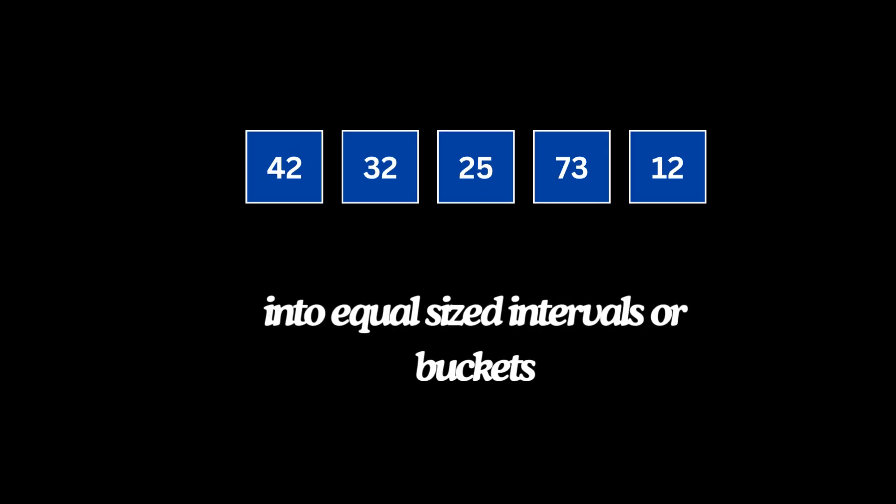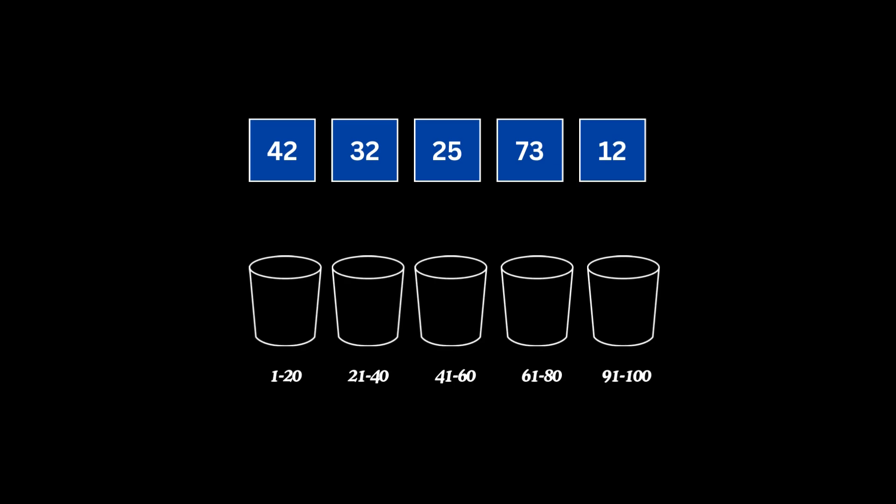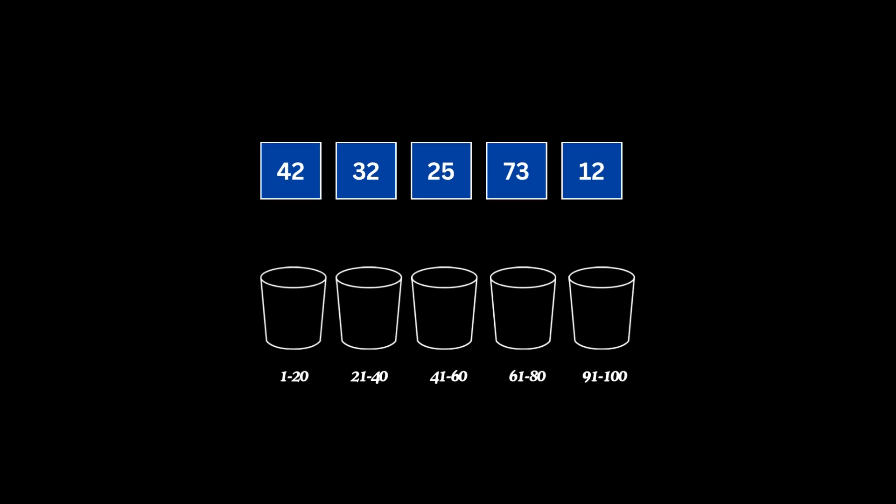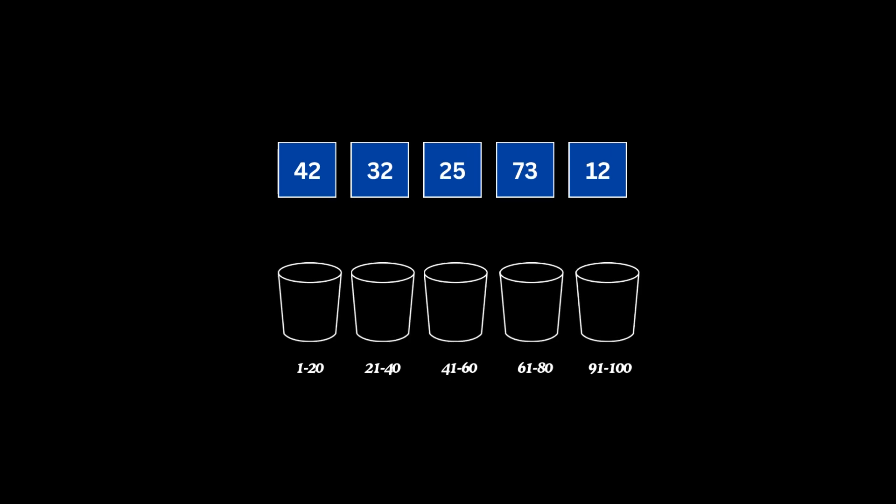First, we divide the range 1 to 100 into equal-sized intervals or buckets. For example, bucket 1 covers 1 to 20, bucket 2 covers 21 to 40, and so on.